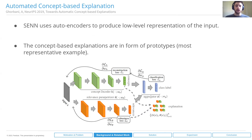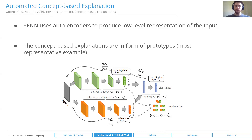There is also another well-known work called self-explainable neural networks, which use autoencoders to produce low-level feature representations, and the concepts or explanations are prototypes — the most representative examples of the input. However, when fraud analysts have very little time to make a decision, presenting another example requires them to analyze it, taking more time. Also, we have no control over what concepts this model provides. So if we want to use domain knowledge to produce better concepts, it's not possible with this method.